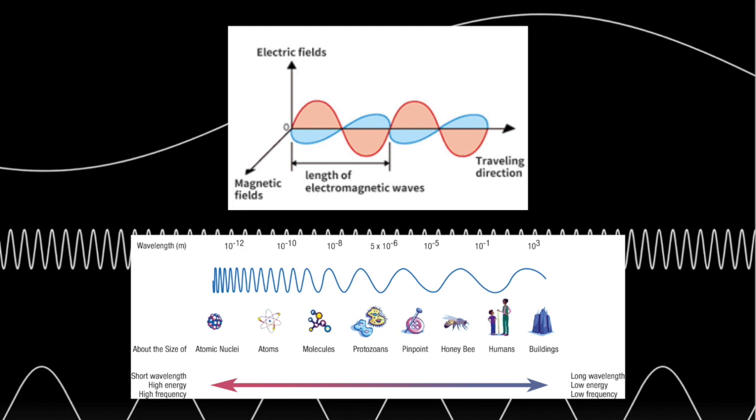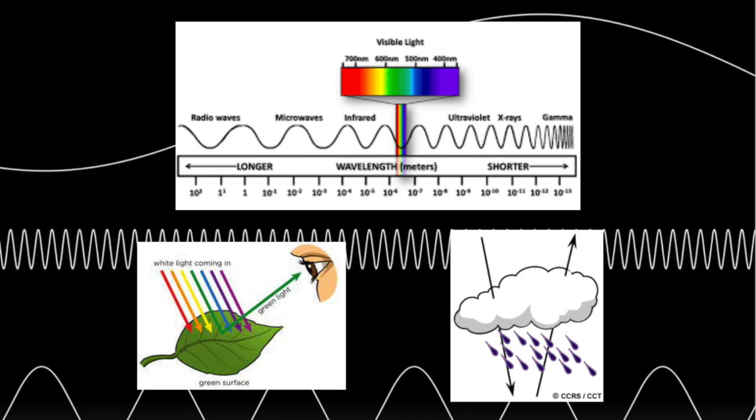The shorter the wavelengths are, the more energy and higher frequency the electromagnetic energy has. Different ranges of wavelengths on the electromagnetic spectrum are given names such as gamma radiation, x-rays, and ultraviolet radiation.